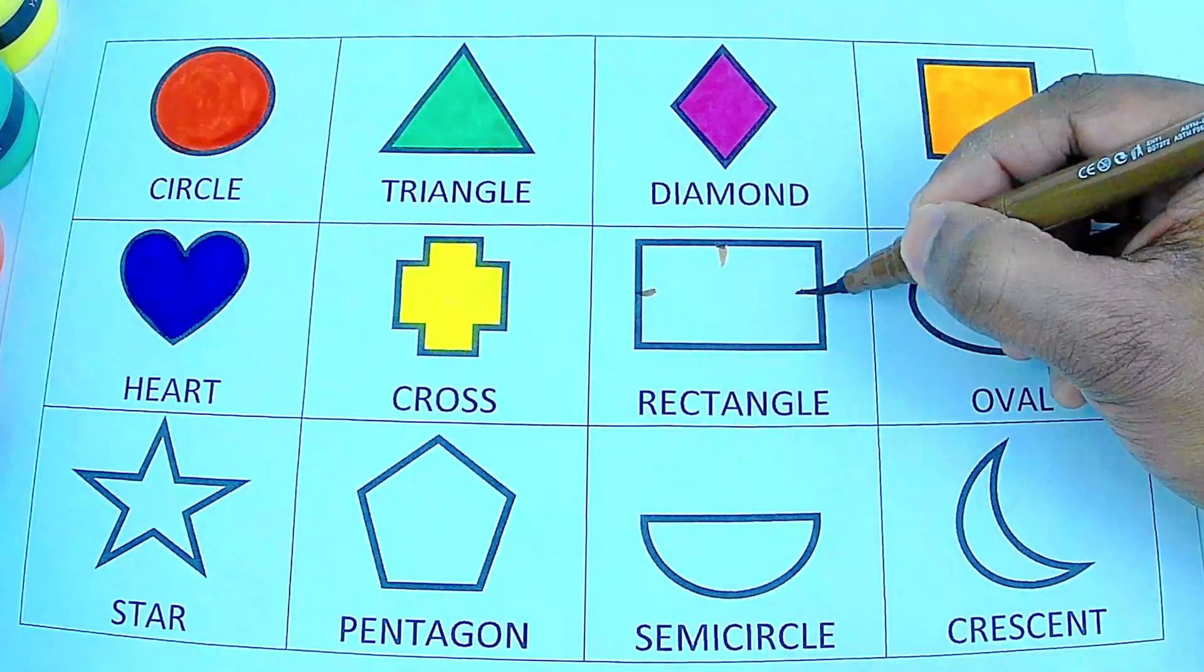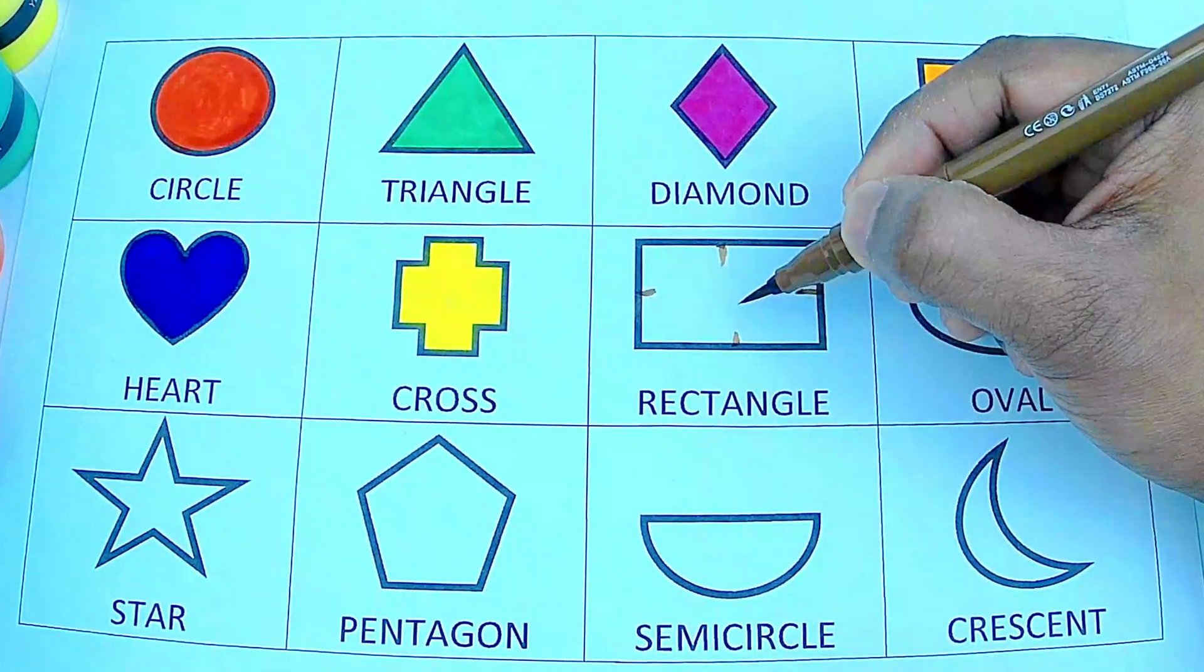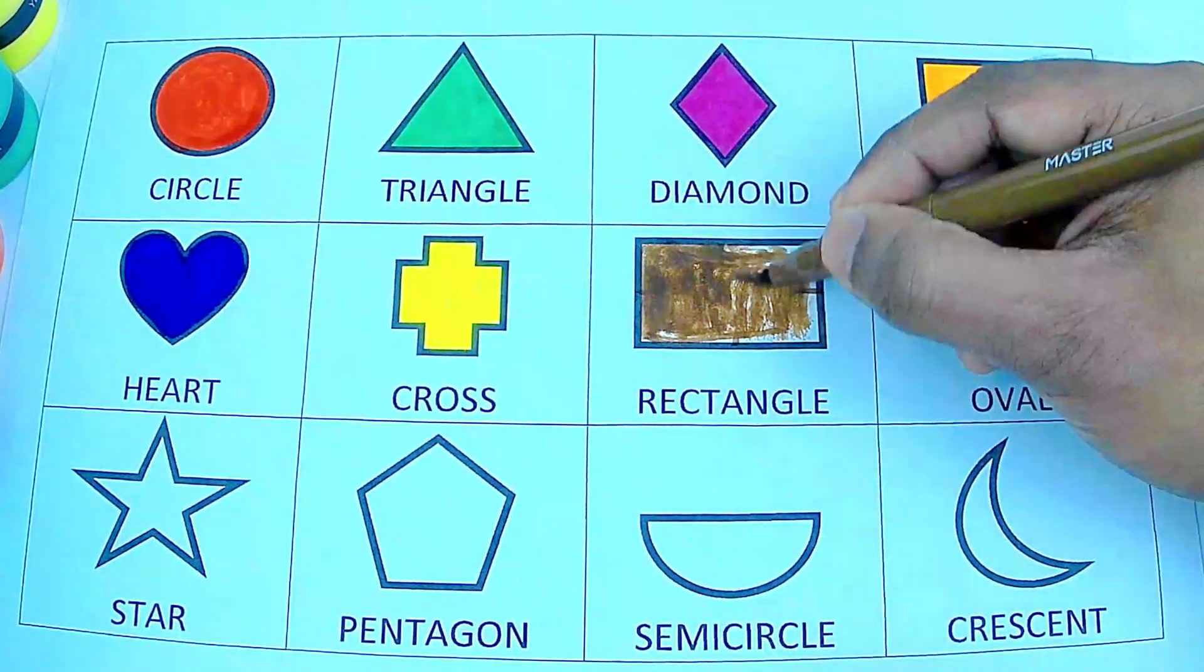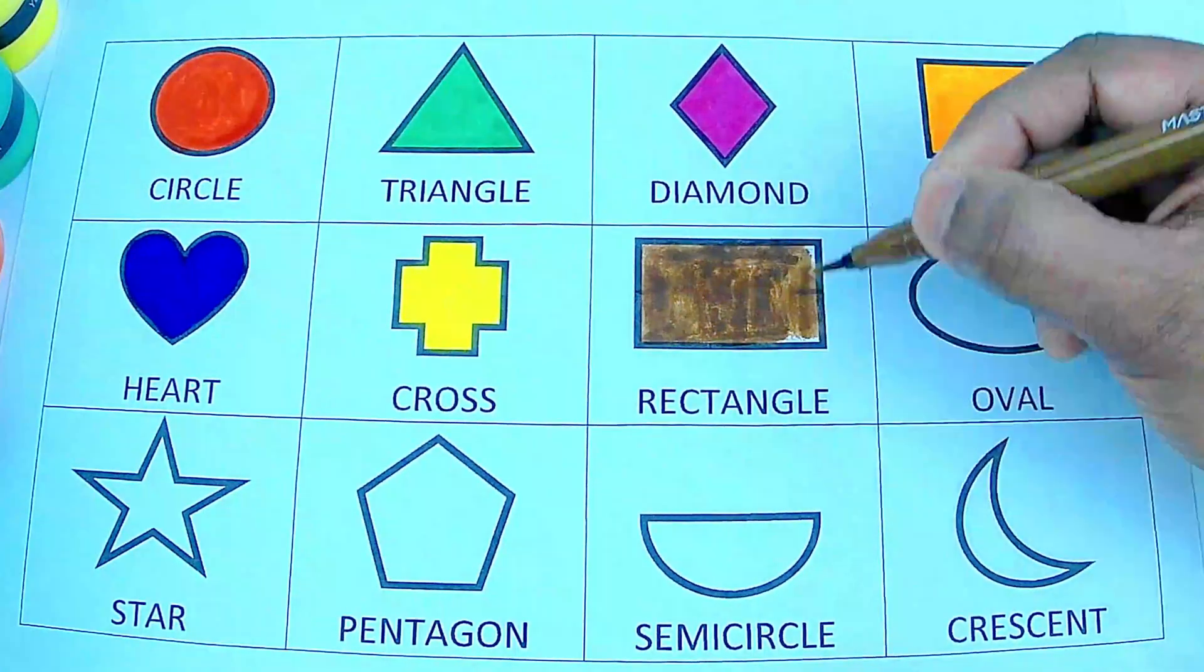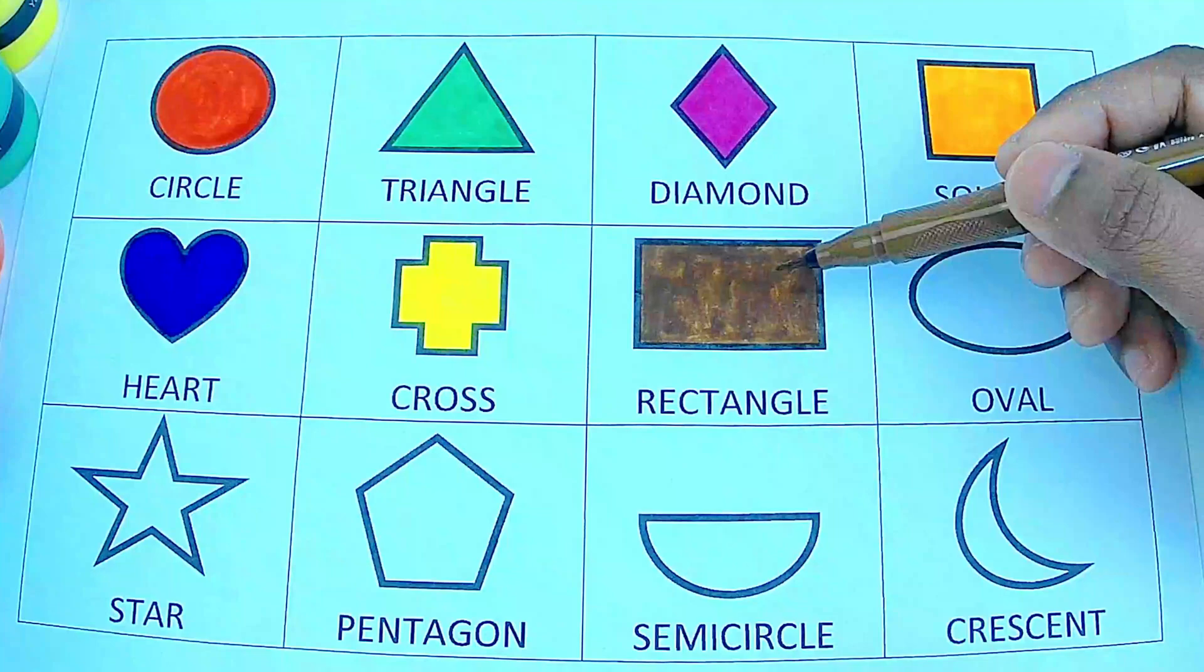Brown color rectangle. A rectangle has four sides. One, two, three, four. Only the opposite sides are equal in a rectangle. Brown color rectangle.